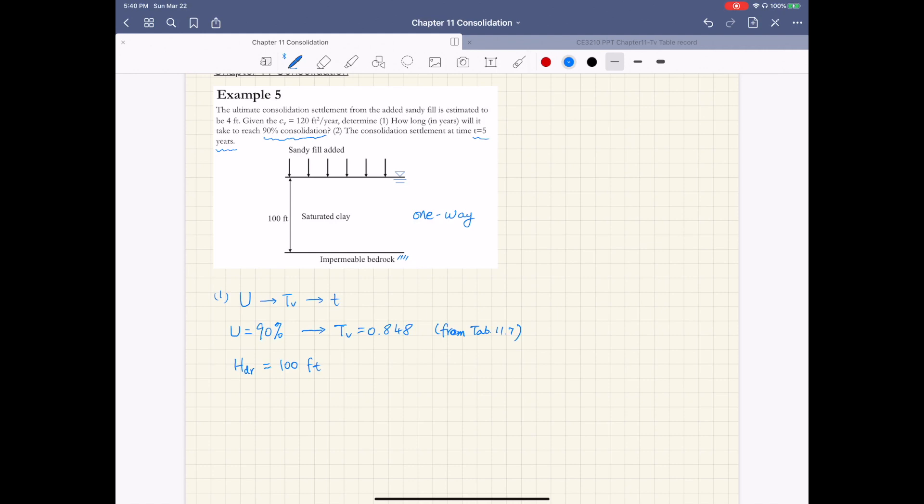And then the time t here, we're given also the coefficient of consolidation is 120 feet cubed per year. So then the small letter t, that's the time of 90% degree consolidation, is 0.848 - that's the time factor - times Hdr squared, that's 100 squared, divided by the coefficient of consolidation, 120. And you're going to get a time in terms of year because your Cv is given in terms of feet squared per year. This gives 71 years.